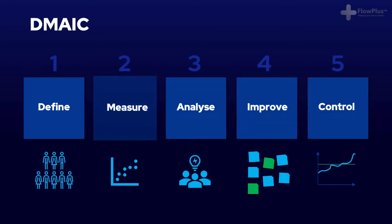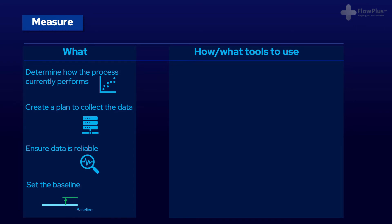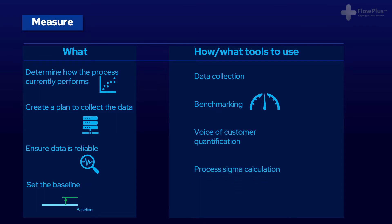Moving on to the measure stage. The measure stage involves quantifying and gathering the facts. How you do this varies greatly depending on what you're trying to measure, but data collection is always the first step. Tools could include benchmarking, where you compare your process to others to see how they differ. Benchmarking is typically used between competitors to measure improvement gaps, but it can equally be conducted internally — for example, if the process happens in five different offices. Process sigma calculations can also be conducted to identify how capable your process is, and hypothesis testing could be used to question the data and state confidence levels.